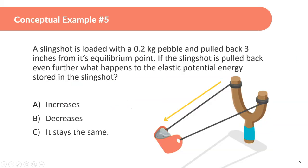Conceptual example: A slingshot is loaded with a 0.2 kg pebble and pulled back 3 inches. If it's pulled back even further, the displacement x increases. Since EPE = ½kx², increasing x means the elastic potential energy also increases.